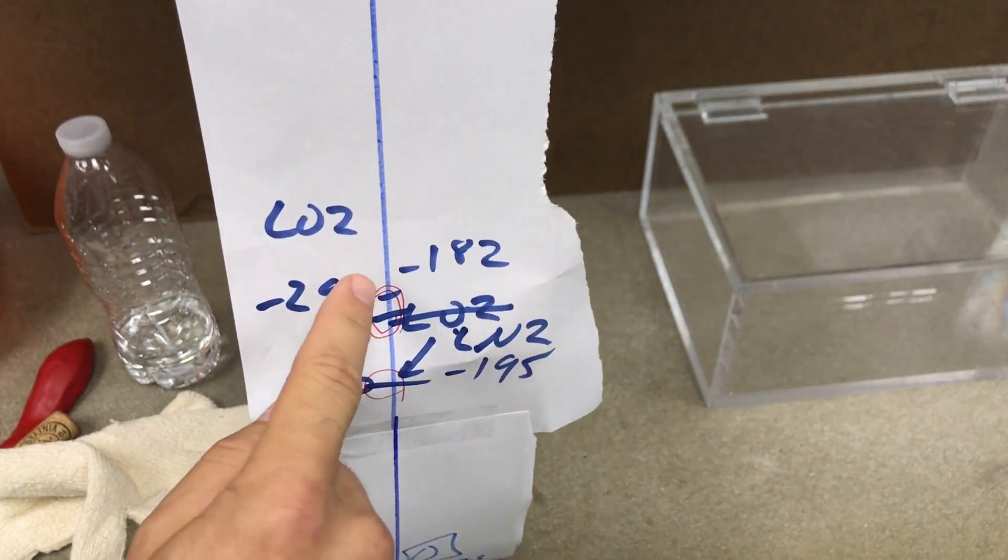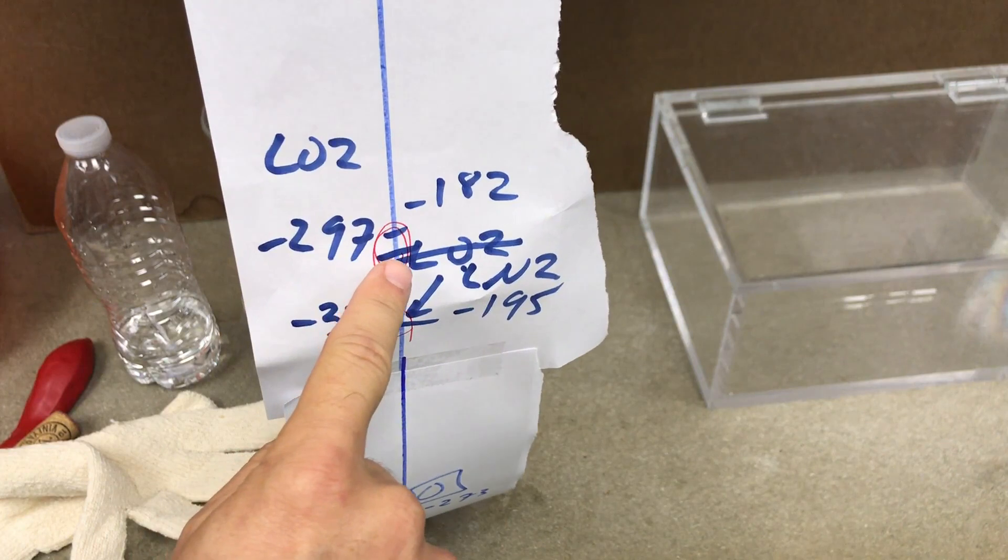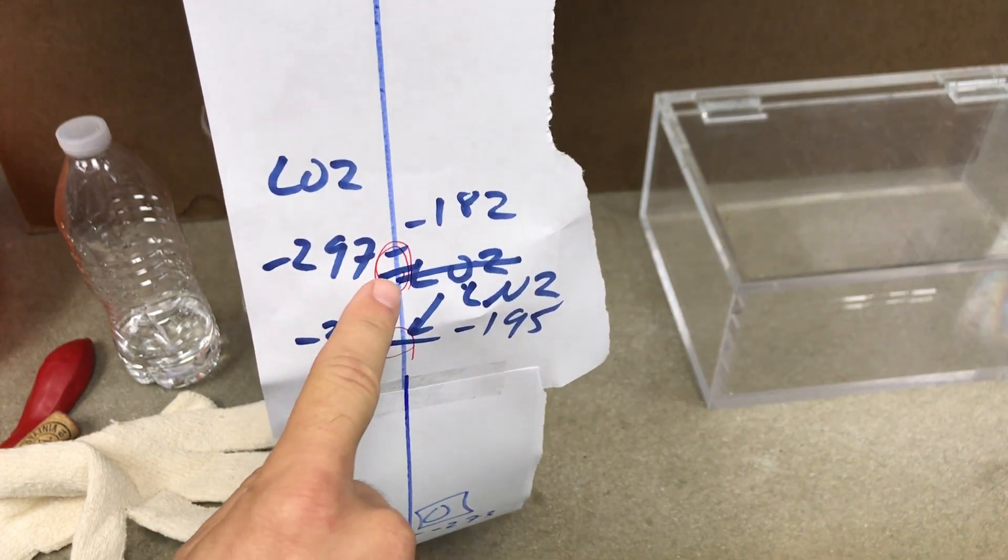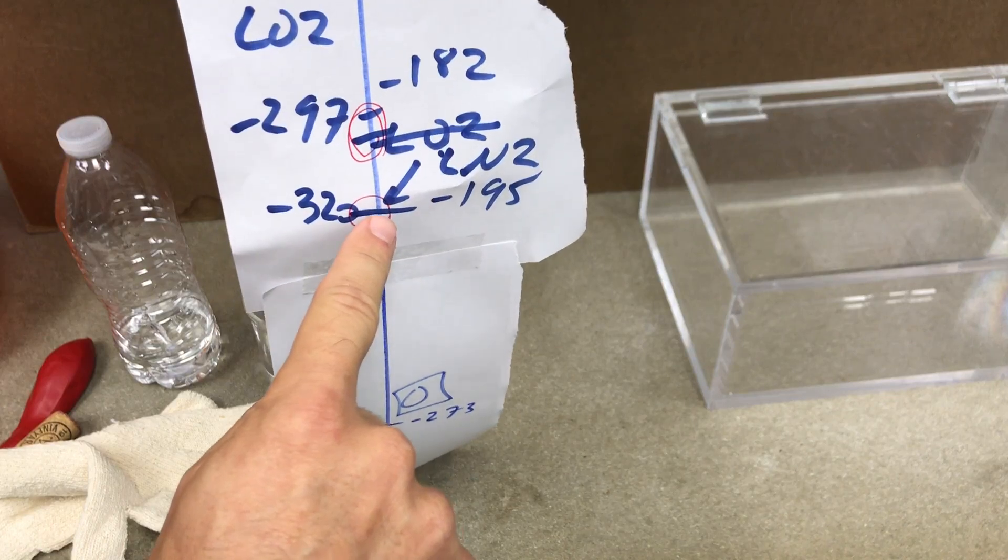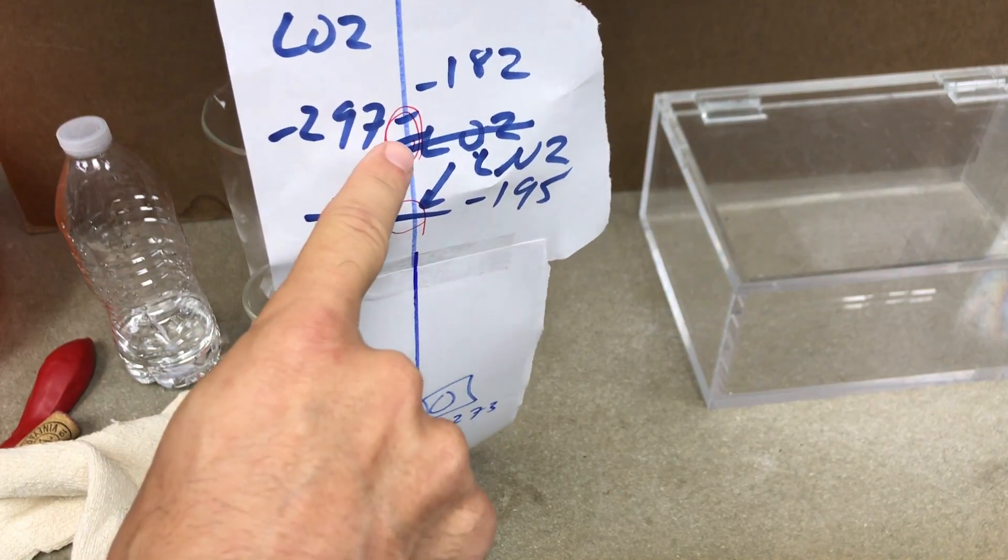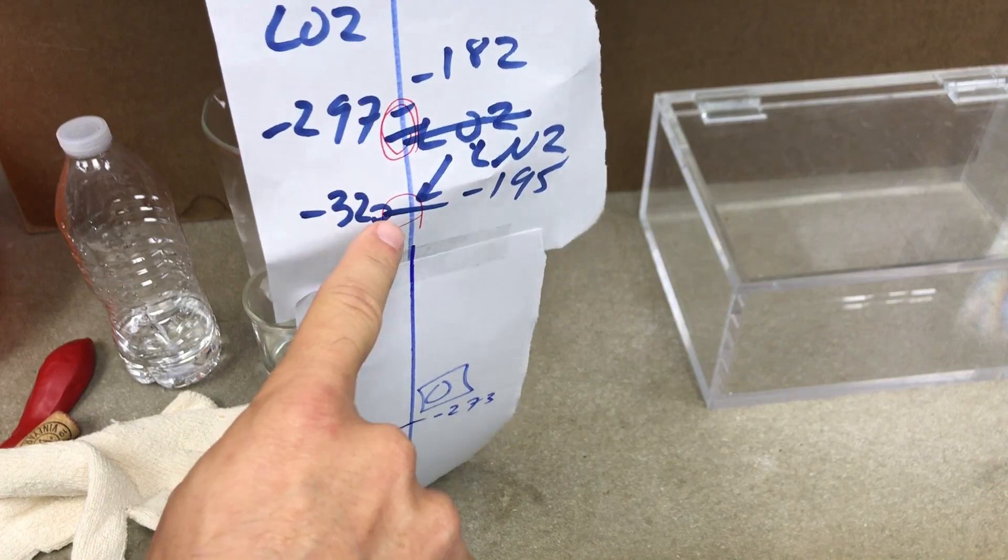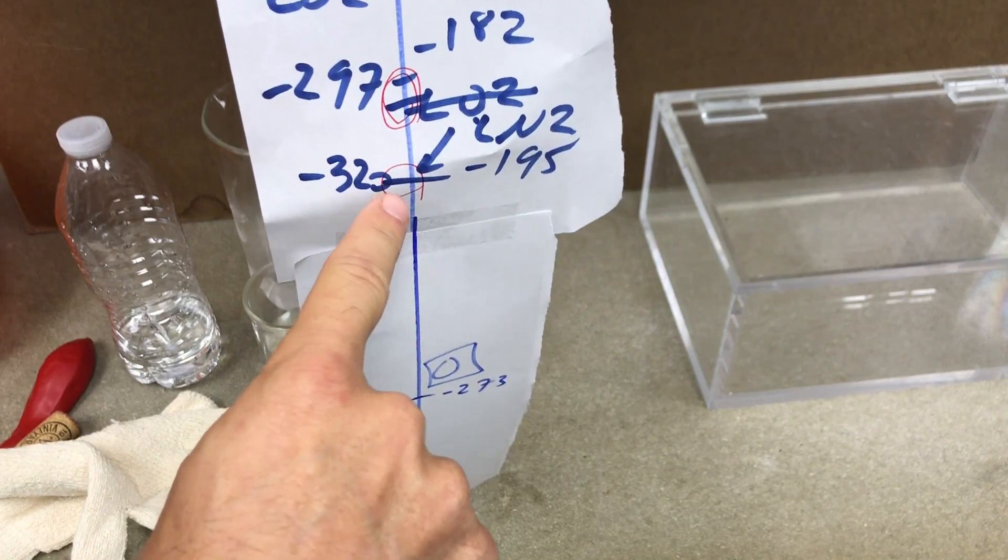Well, look over here. This point right here is negative 297. That is liquid oxygen. And then negative 320 is liquid nitrogen. So in MacGyver, where you're talking about liquid oxygen, but it's not as cold as liquid nitrogen, but they're close.